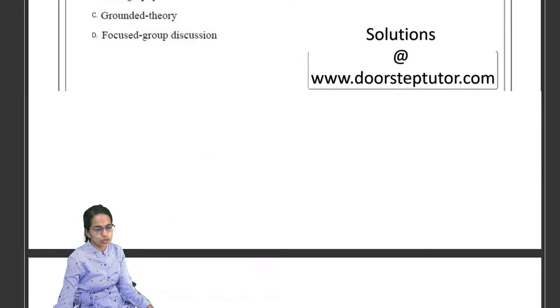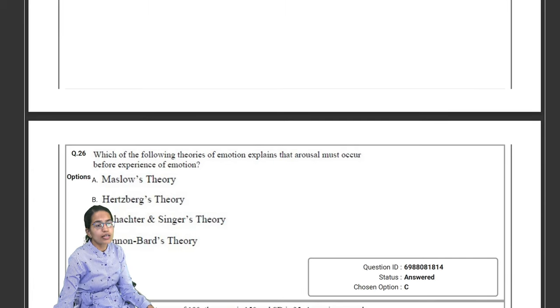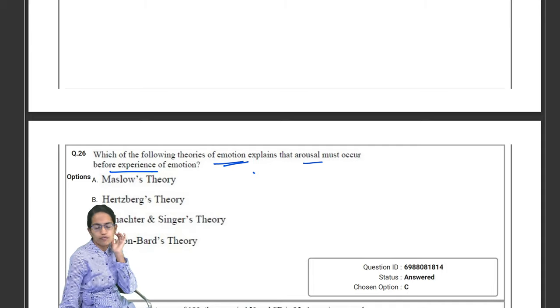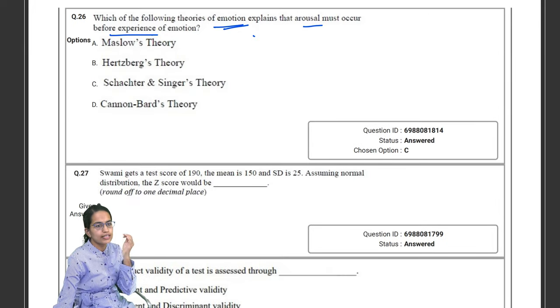Erikson's, as I already mentioned, so fifth stage is a very, very direct question that you must know. Questions related to social cognition, qualitative learning. Then again theories of emotion have been asked: in which theory arousal must occur before experience?